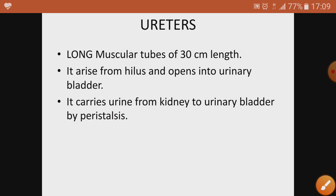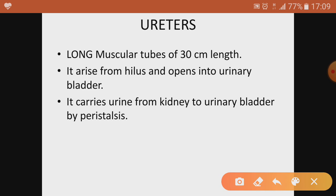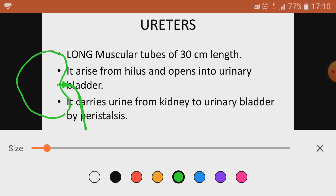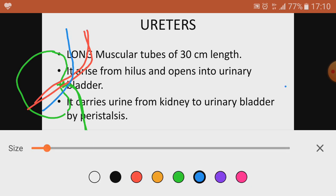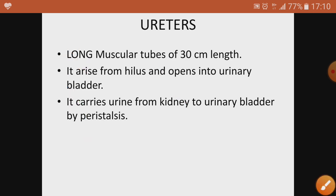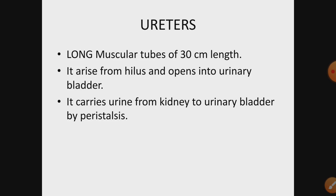We know kidneys are the main excretory organ. Urine comes down from the kidneys to the urinary bladder through the ureters. Ureters are long muscular tubes of 30 centimeters in length and they arise from the hilus. The hilus is a notch-like structure on the kidney where the renal artery, renal vein, and ureter all enter or exit.